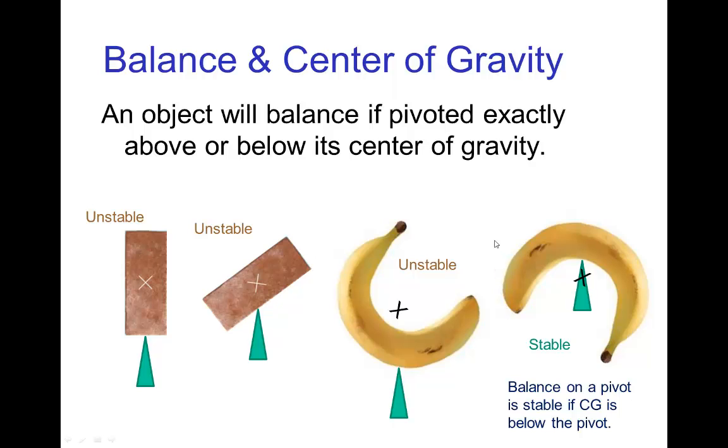Now, one property of the center of gravity is that if you have an object that's exactly balanced on a pivot point, then the center of gravity will be either directly above the pivot point or directly below the pivot point. If it's directly above the pivot point, then any small shift in the object and it tips over and falls over. So that's an unstable balance.